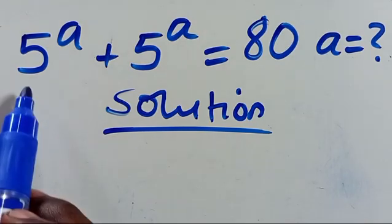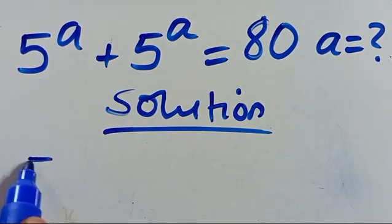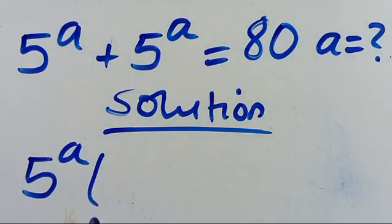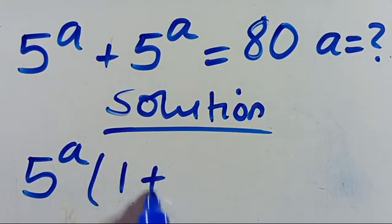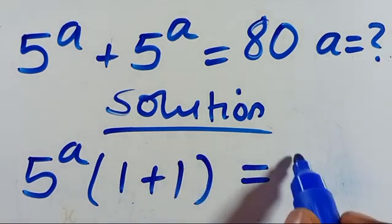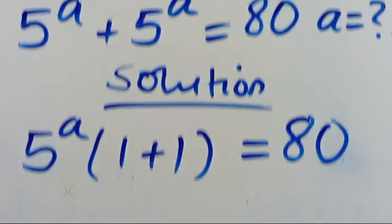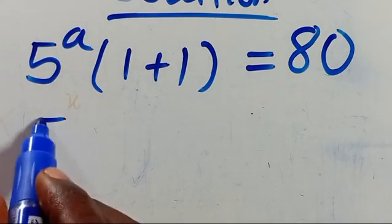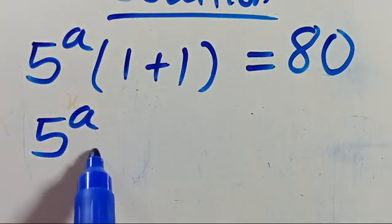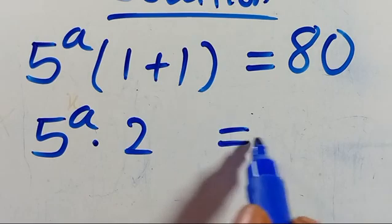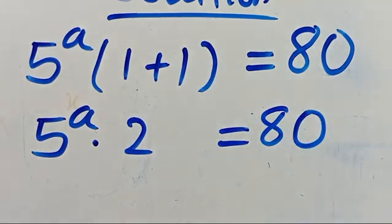So we have 5 to the power of A in common, so we can factor it out to be 5 to the power of A, then open parentheses. This 5 to the power of A divided by itself gives us 1, plus the second term gives us 1, which equals 80. So from here we have 5 to the power of A multiplied by 1 plus 1, which gives us 2, and that equals 80.